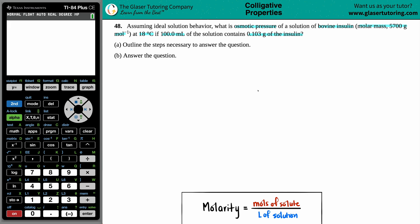We need to outline the steps necessary to answer the question and then answer the question. In this case, we're specifically asking for osmotic pressure. If they tell you osmotic pressure, the word osmotic's got to be in there. There's generally only one formula that is used in chemistry, and that's this formula right here.